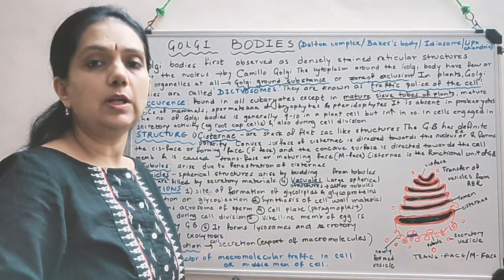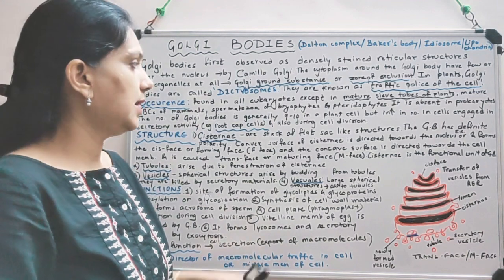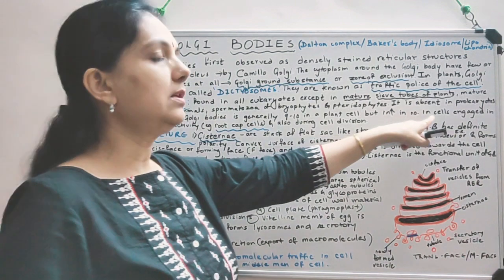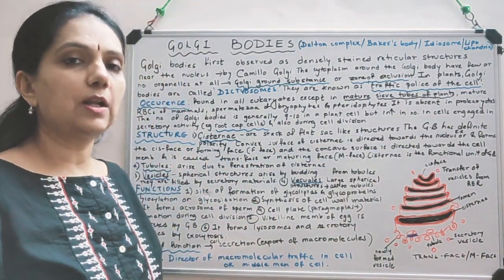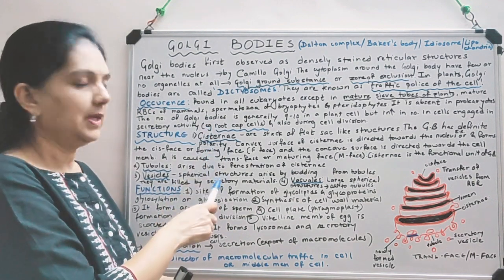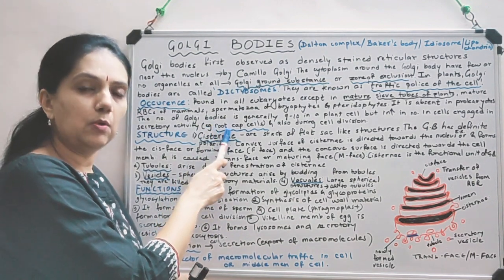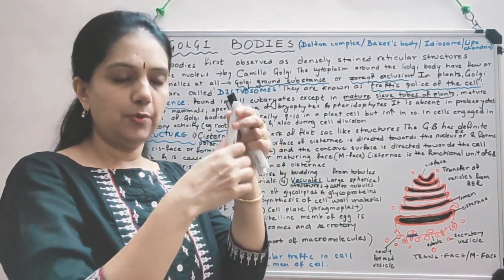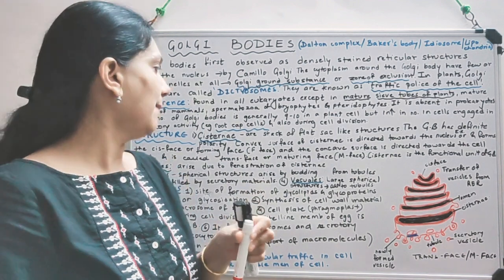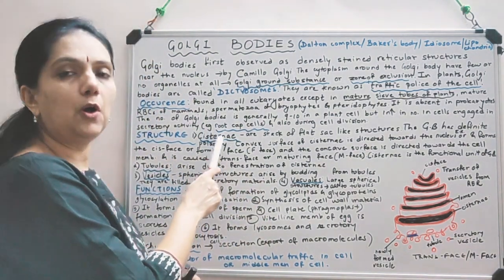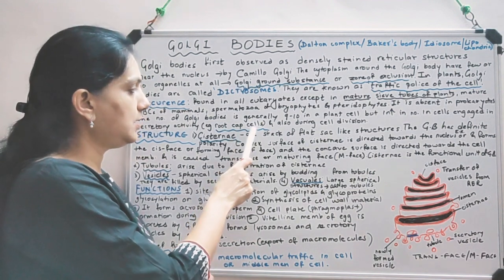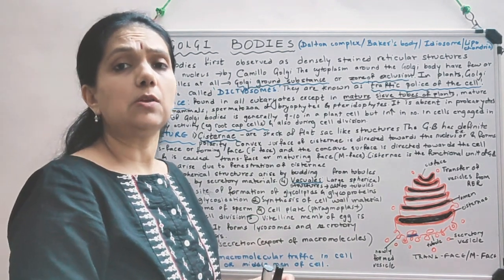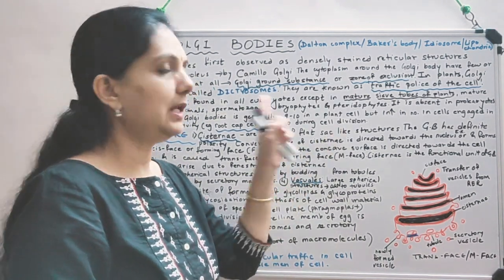The number of Golgi bodies is generally 9 to 10 in a plant cell, but it will increase in those cells which are engaged in secretory activity - for example, root cap cells. The number of Golgi bodies also increases at the time of cell division.